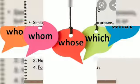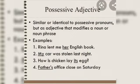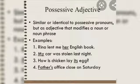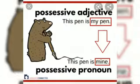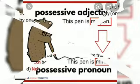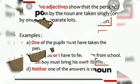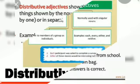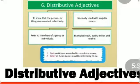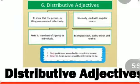Next is possessive adjective. It indicates the ownership of an object or noun. Here, my is a possessive adjective. Next is distributive adjective. They refer to members of a group. For example, each, every, either, and neither are distributive adjectives.